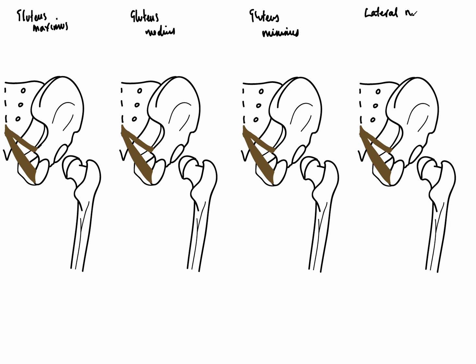On this drawing I'm going to draw a series of what are known as lateral rotators. As their name suggests, they laterally rotate the thigh — moving the thigh away from the midline, as if turning your right leg outwards. There's a series of these muscles: piriformis, superior and inferior gemellus, obturator internus, and quadratus femoris.